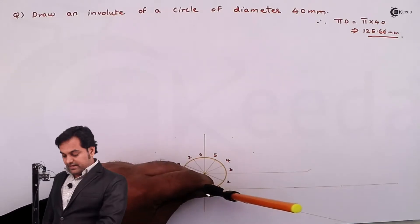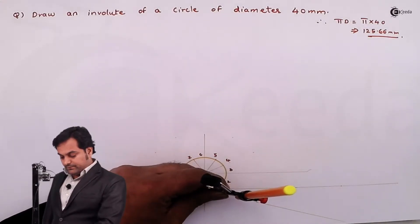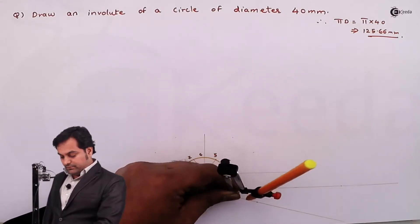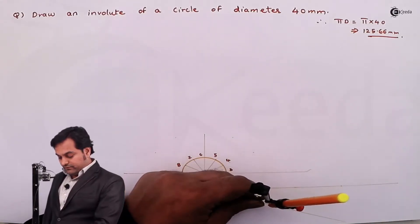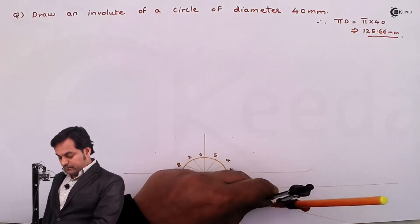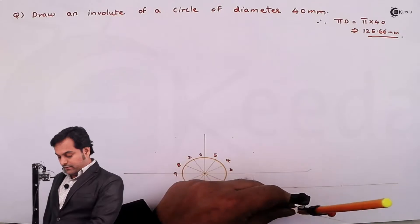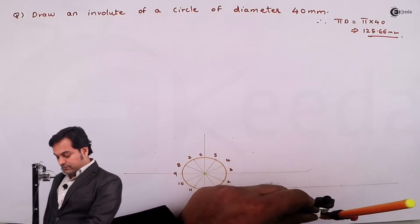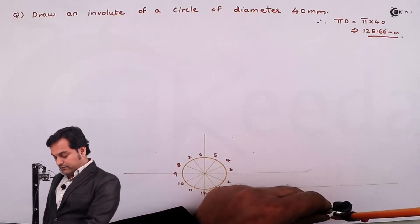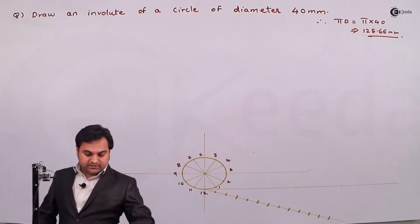Setting the compass to 1 centimeter — equal to one division — I'll divide the angle line into 12 parts: first, second, third, fourth, fifth, sixth, seventh, eighth, ninth, tenth, eleventh, twelfth. So I have divided it into 12 equal parts.